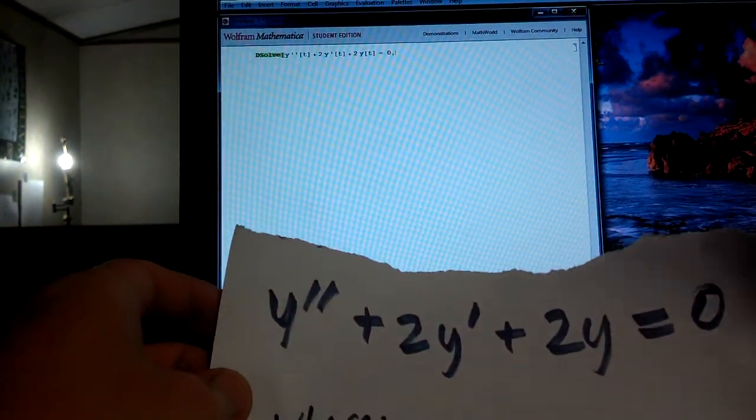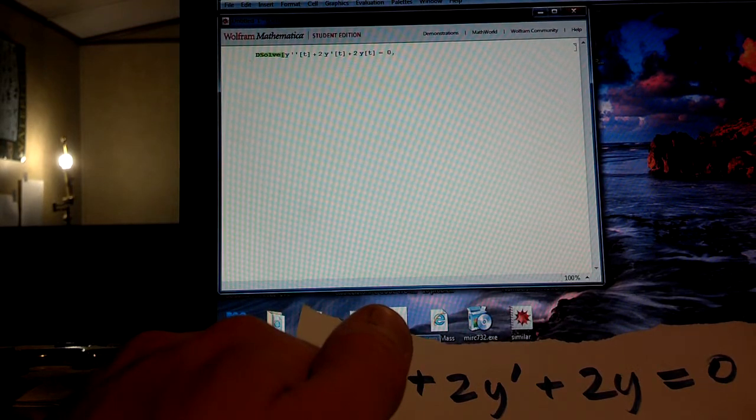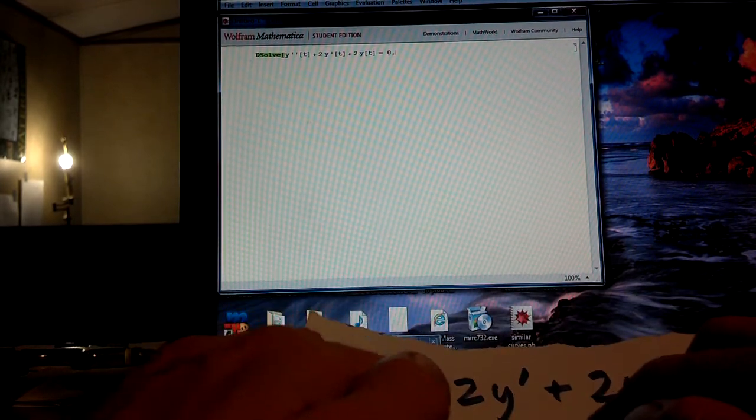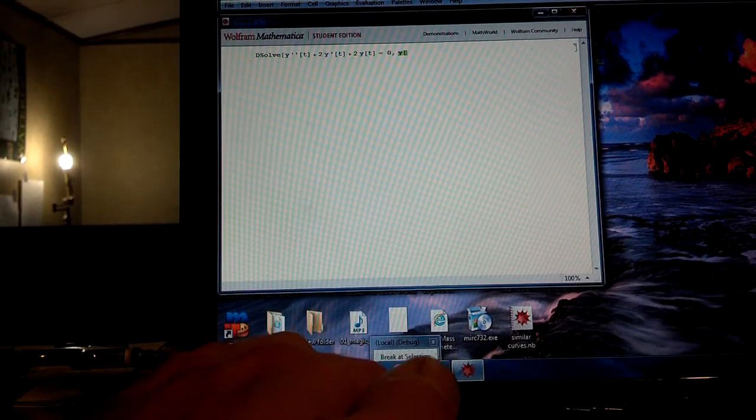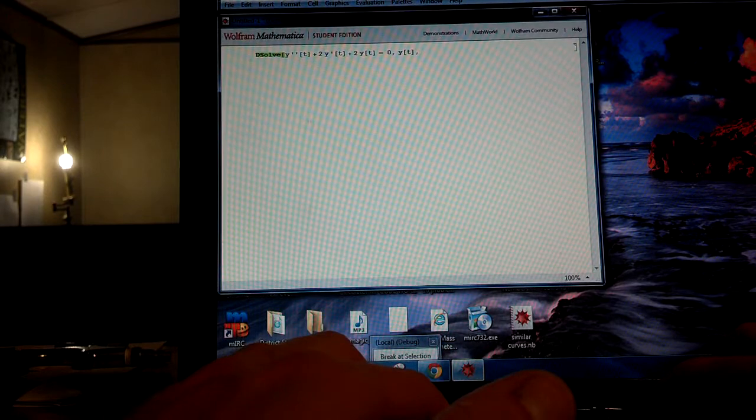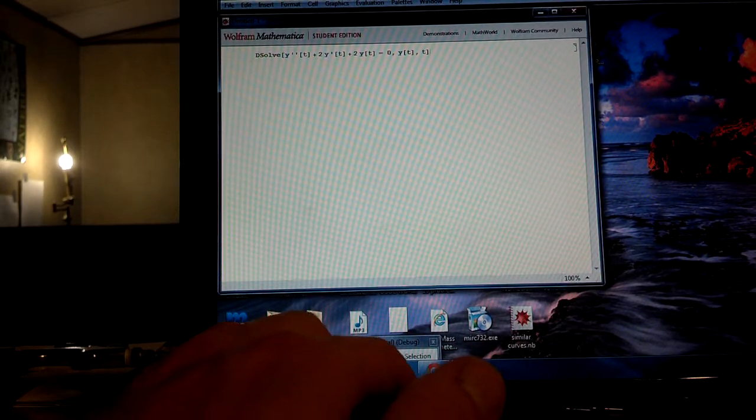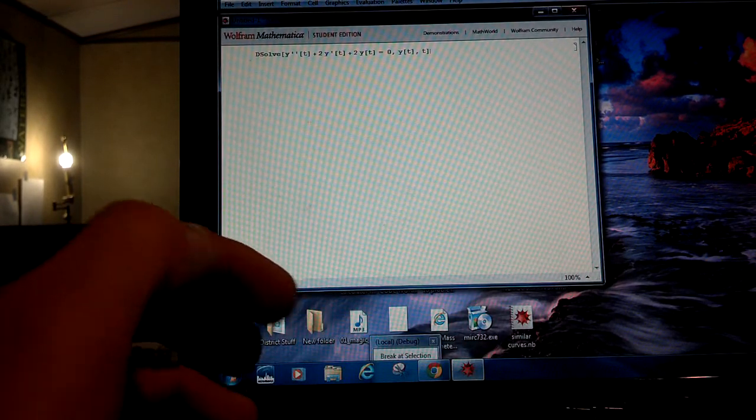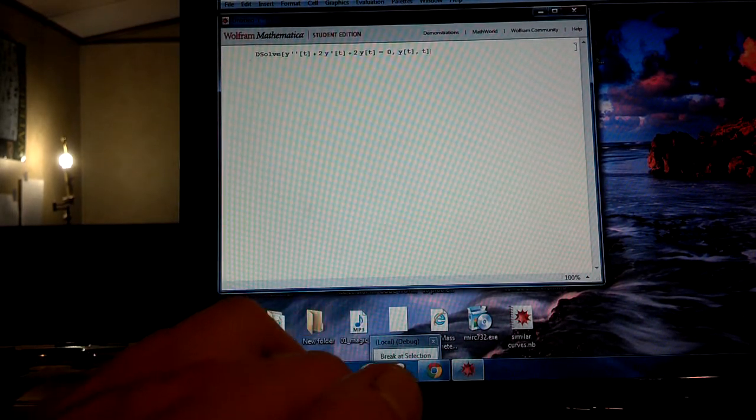And then I hit a comma after it. Now, I need to say what is the dependent variable, so in this case it was y. So y bracket t, and then comma, now I want to say what the independent variable was, which is t. And now, close square brackets. Now, this is another key thing, when you want it to solve something for you, you have to hit the shift key and hold it down, and then hit enter. So I got shift down, and then I hit enter.